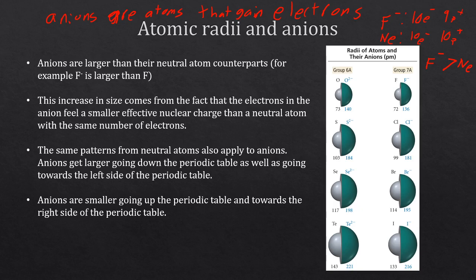Just like cations, the same patterns for neutral atoms also apply to anions. As you go down the periodic table they get bigger, and as you go to the left they get bigger. For example, I minus isn't as big as Te 2 minus. And going up and down, O 2 minus is smaller than S 2 minus. So those patterns don't change.